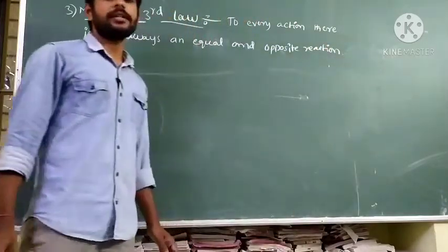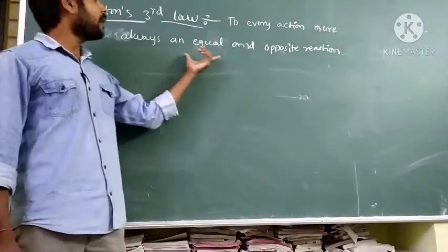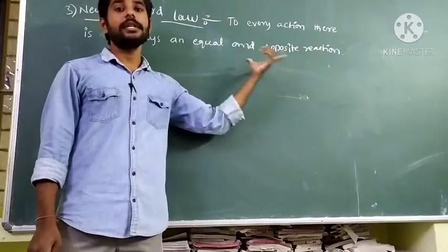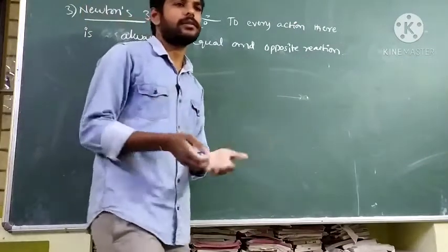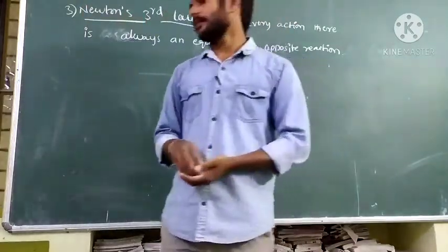For every action, there is an equal and opposite reaction. How is it possible? So, general example I have. Just, I will explain general examples.